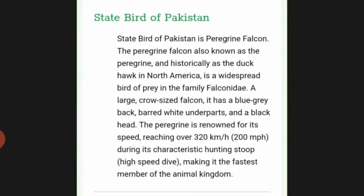The state bird of Pakistan is the Peregrine Falcon. Also known as the Peregrine and historically as the Duck Hawk in North America, it is a widespread bird of prey in the family Falconidae. It is a large, crow-sized falcon with blue-gray back, black head, and barred white underparts. The Peregrine is renowned for its speed, reaching over 320 km per hour during its characteristic hunting stoop, making it the fastest member of the animal kingdom.